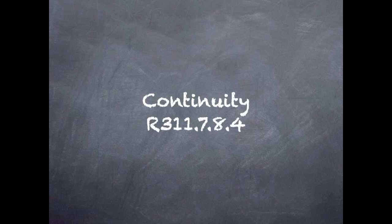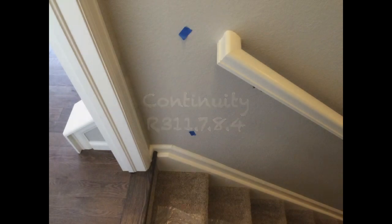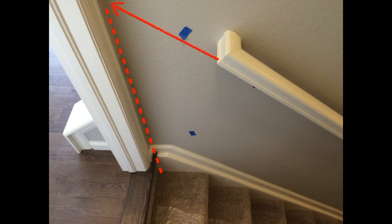I'm going to go a little out of the IRC order and talk about handrail continuity next. This section requires that a handrail run continuous from the nosing of the top landing to the nosing of the bottom tread. You can see in this example it's a little bit short of the top.